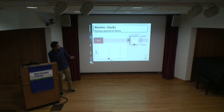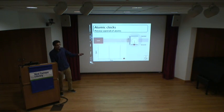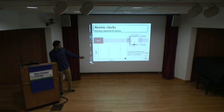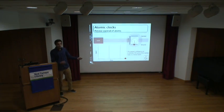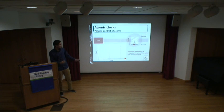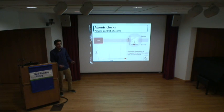Every time the cesium atom absorbs a photon, it's like a tick of our clock. We count these ticks — and this is exactly how we measure time. We define a second as the amount of time it takes a cesium atom to undergo nine billion such ticks. Cesium is special because it can be cooled to incredibly low temperatures, and we know precisely that nine billion ticks means exactly one second has passed.